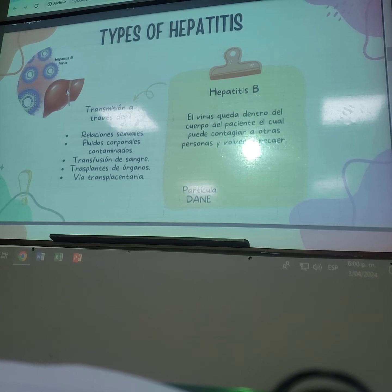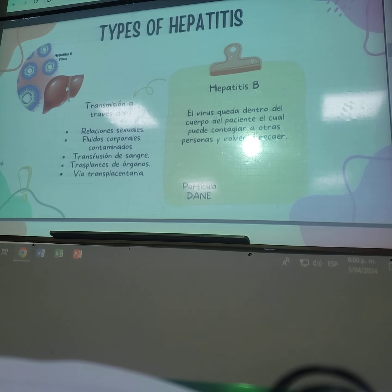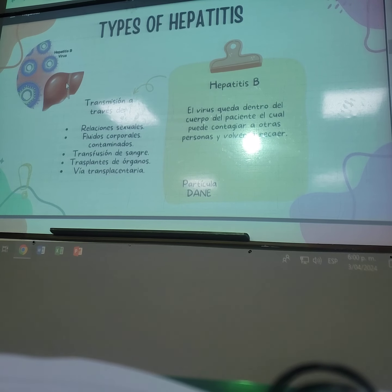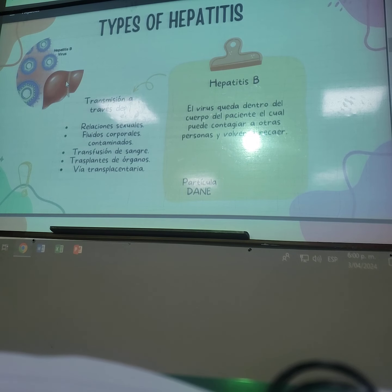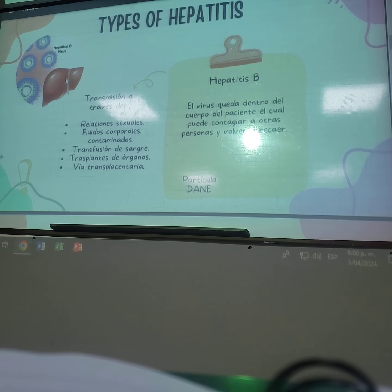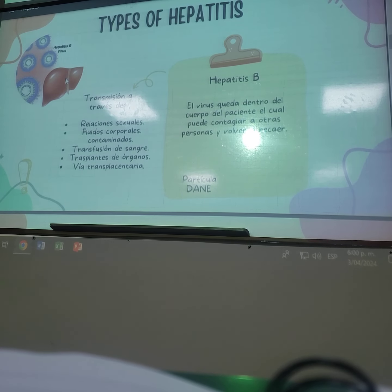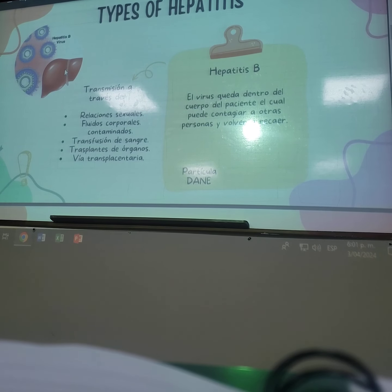En la hepatitis B, esta es una enfermedad que se contrae por medio de hepatitis aguda crónica. La hepatitis aguda puede presentar dolor abdominal en la parte superior derecha, que es donde se encuentra el hígado, náuseas y debilidad. En la hepatitis crónica el paciente puede presentar debilidad y falta de apetito. Esto se transmite a través de relaciones sexuales, fluidos corporales como sangre, semen y flujo vaginal, transfusiones de sangre, agujas o jeringas contaminadas, y por vía transplacentérica. La vía transplacentérica es cuando la madre está embarazada y se le recomienda tener una cesárea para evitar la diseminación del virus hacia el bebé.